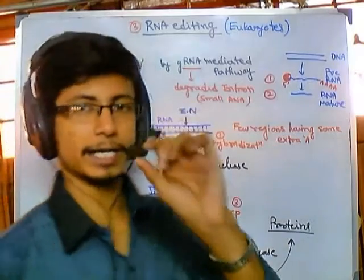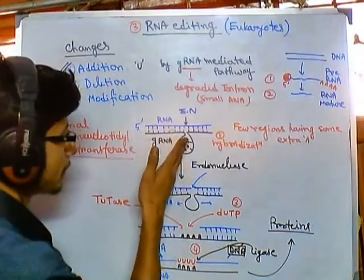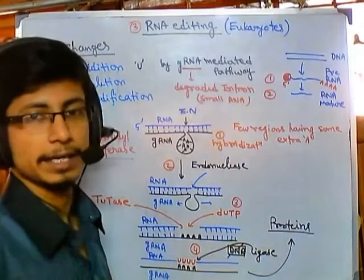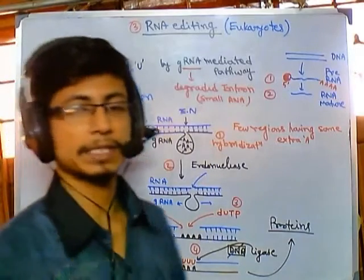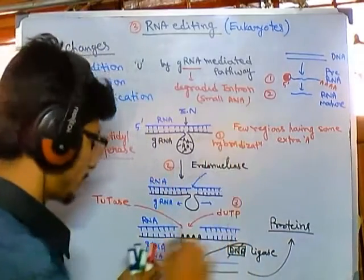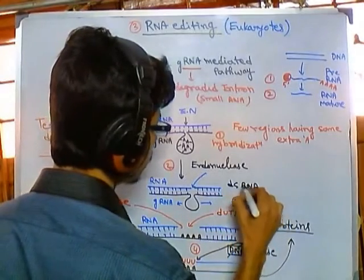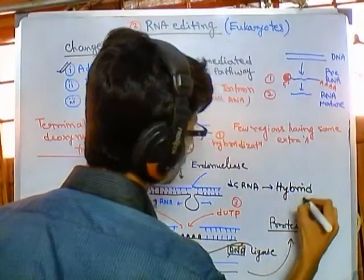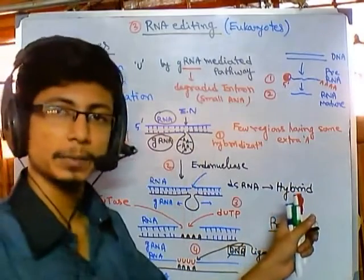This is the process of guide RNA mediated RNA editing. We can see this guide RNA is helping this editing to be established — that is why it is called guide RNA. Everything present in this double-stranded structure is RNA — all of them are double-stranded RNA sequences. This double-stranded RNA is a hybrid: one strand is the normal RNA and the other is the guide RNA.